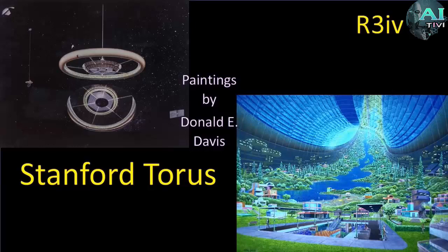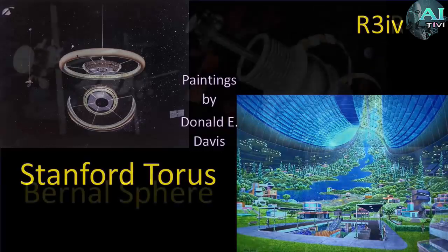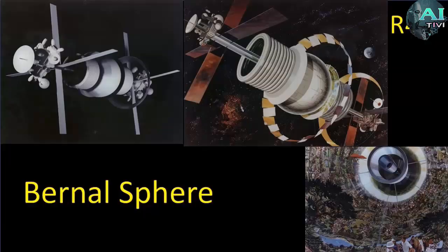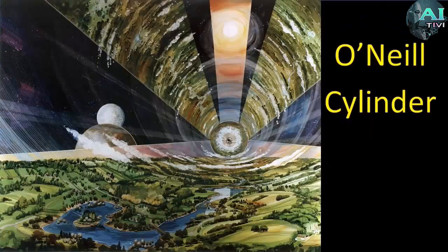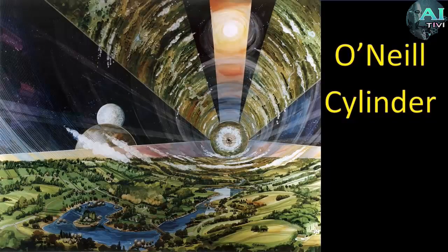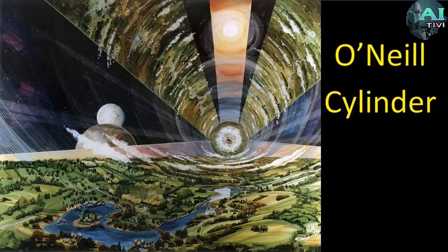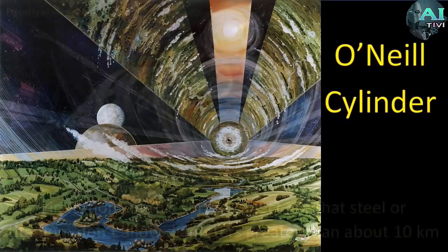One of the first of these is the Stanford Torus. There's also the Bernal Sphere, which is another one from that era, and these are designed with the assumption that you're using steel to make them. These are all examples of what are generally known as O'Neill cylinders, named for Gerard O'Neill, and work under an assumption that you're powering these things with the light of the local sun, that they are some kilometers across or miles across, and that they could be home to many thousands, tens of thousands, or hundreds of thousands of people.